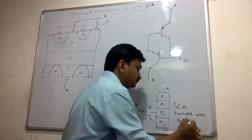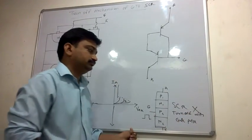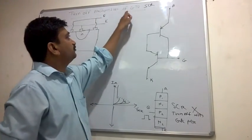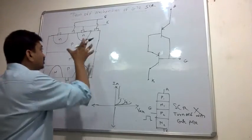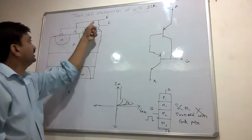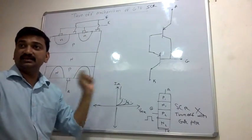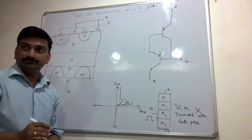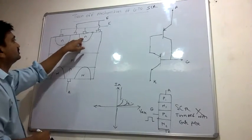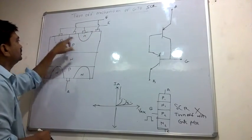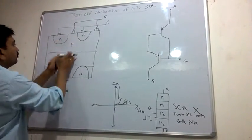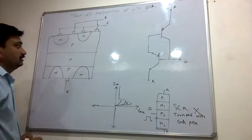In the Gate Turn Off SCR, the turn off mechanism means we can turn it off with a negative pulse by providing a negative pulse to the gate. That's why it can control the current moving through it.